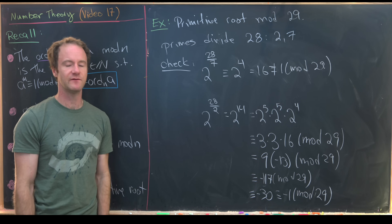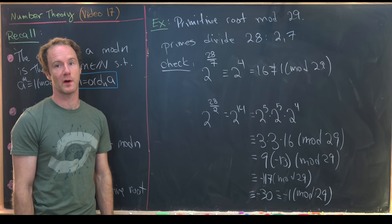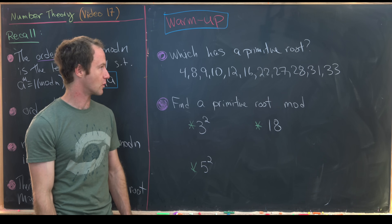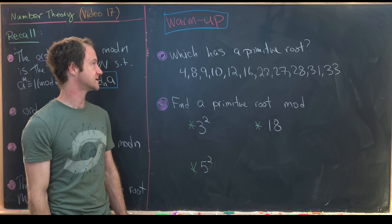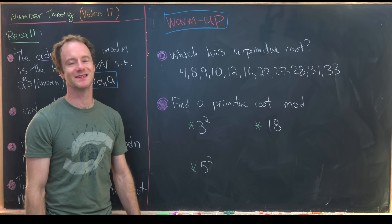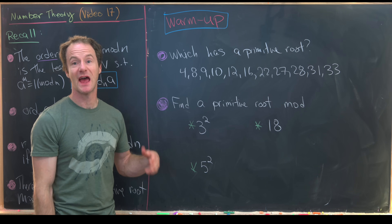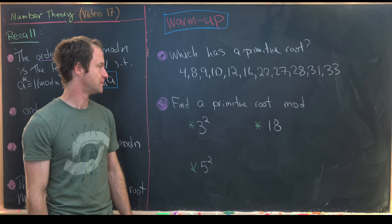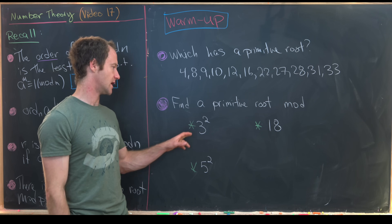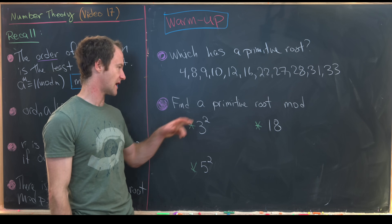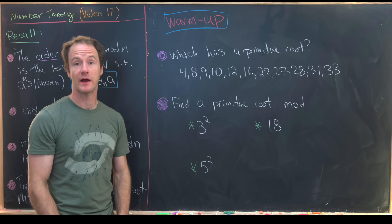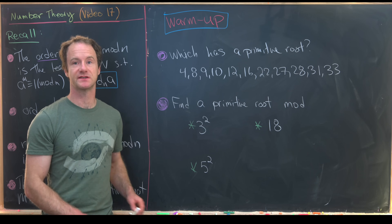Let's leave you with some warm-up exercises. The first is to determine which numbers from a given list have a primitive root. The second is to find a primitive root mod 3 squared, 5 squared, and 18.